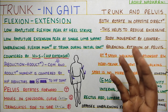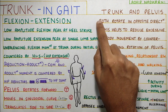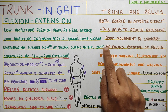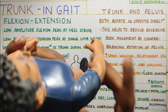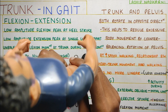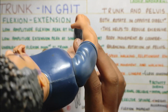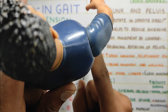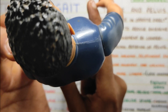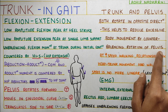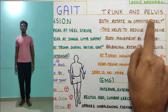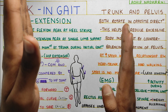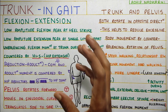Now that we understand pelvis movements, let's look at how trunk and pelvis work together. Both the trunk and pelvis rotate in opposite directions. This helps reduce excessive body movement and counterbalances the rotation of the pelvis. In normal gait, as you take your leg ahead, your pelvis moves forward — but to counterbalance this, your trunk rotates in exactly the opposite direction. So if the pelvis goes forward on one side, the shoulder on that side goes back. These opposing rotations counterbalance each other, resulting in minimal energy wastage.